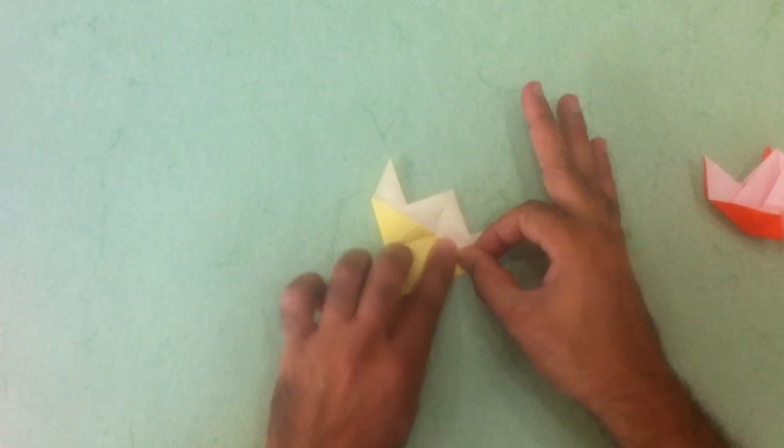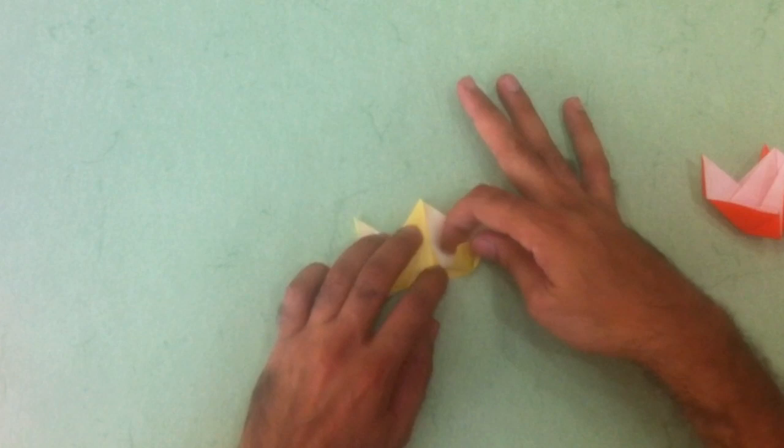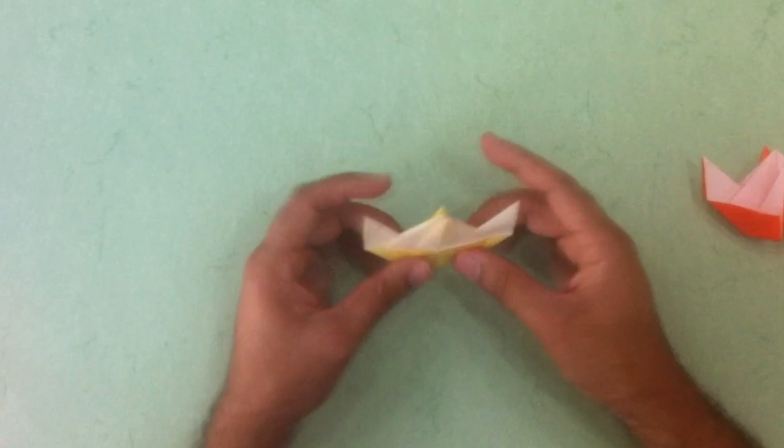And the last one. This flap is going to be the tab. The other one is going to be the pocket. So I open this one. Put it up back. Reverse this fold. Reverse this fold. And I have two units.